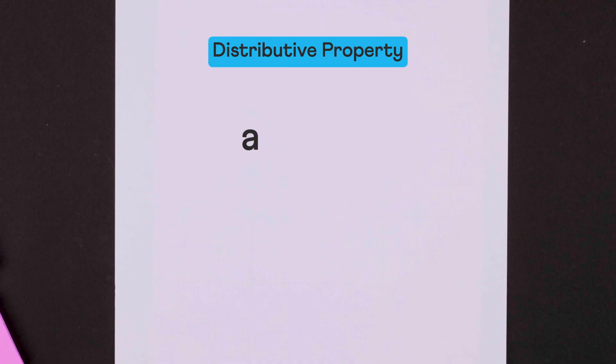The distributive property says that if a number is being multiplied by the difference of two numbers, then we multiply it by the two numbers separately and then subtract their products.